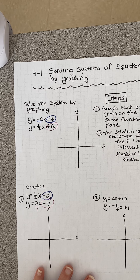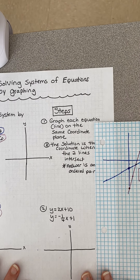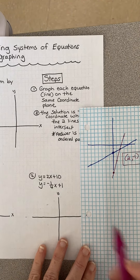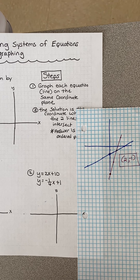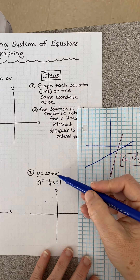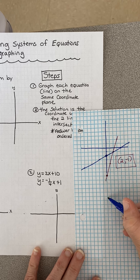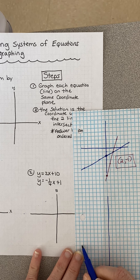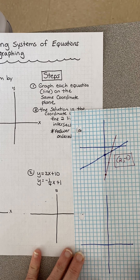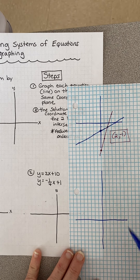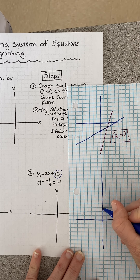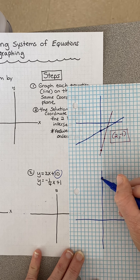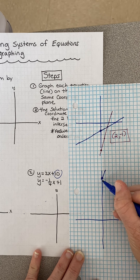Let's practice another one. Once again it's slope-intercept form. I noticed this y-intercept is 10, so I need to make sure I have enough room up high on the graph. My y-intercept is 10, and my slope is 2 over 1 - rise 2, run 1. Let's hope the intersection is down here somewhere.